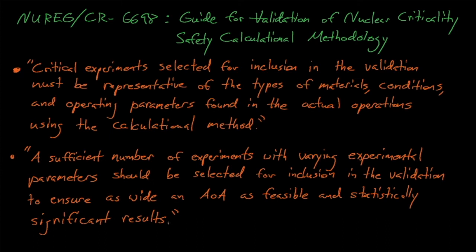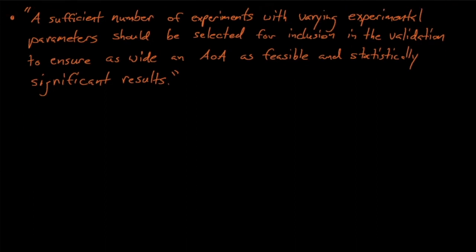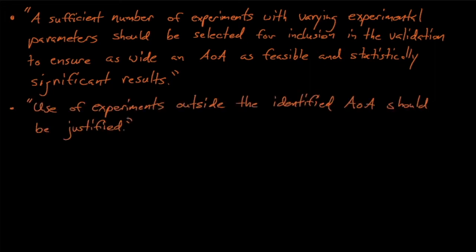Lastly, 6698 states that use of experiments outside of the identified AOA should be justified. This statement makes sense too. It doesn't make sense to use HEU benchmarks to validate a pure Plutonium-239 system, and we should have to justify why we include benchmarks that are statistically dissimilar compared to our target application. If these experiments are at best contributing noise, and at worst biasing the results of our validation study, then we should not include them.